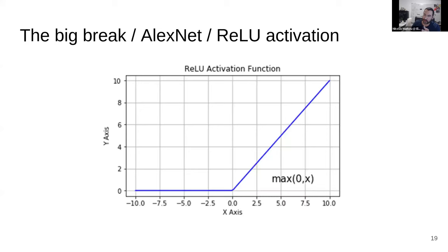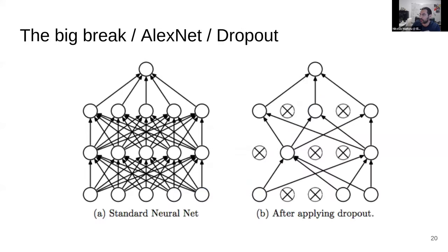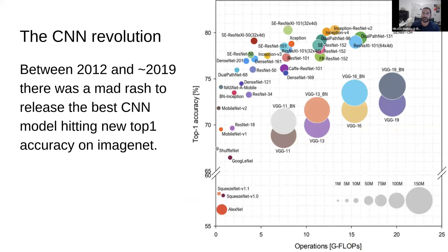ReLU activation, this is how it looks, nothing fancy, but it has some nice properties. Dropout for disabling neurons and avoiding overfitting. This was one of the main regularization methods that they used. So what this thing did at that moment, 2012 to 2018, everybody wanted to make their own convolutional neural network. It was insane. It was a mad rush.